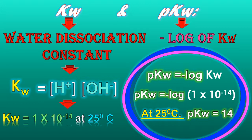Friends, PKW is the negative log of KW. So here we know that the KW value is 1 × 10^-14.